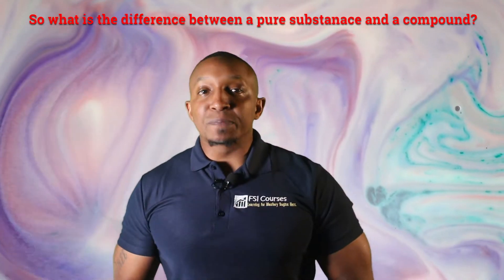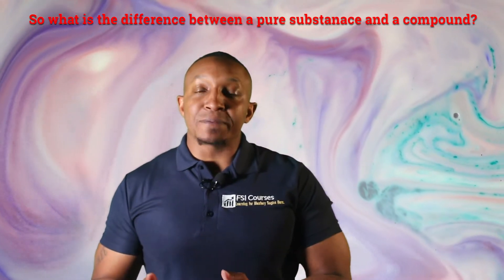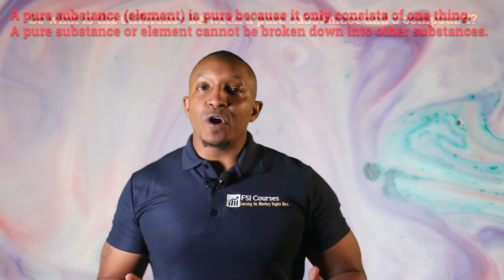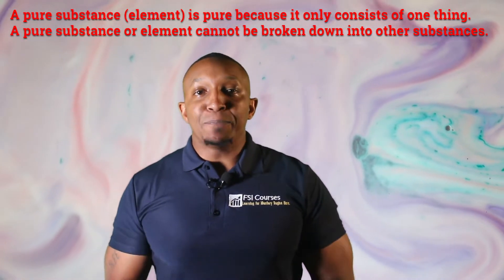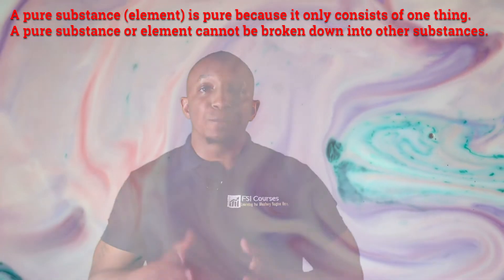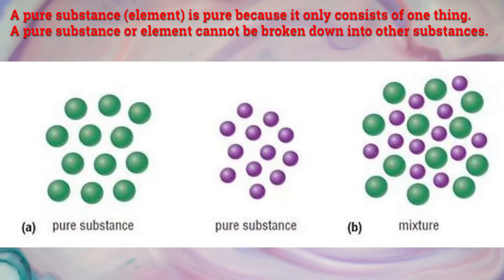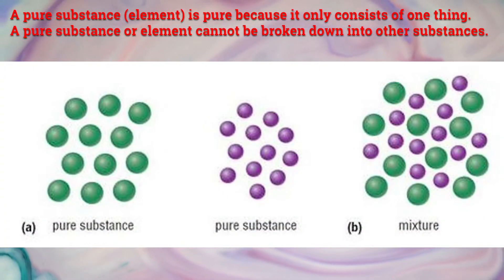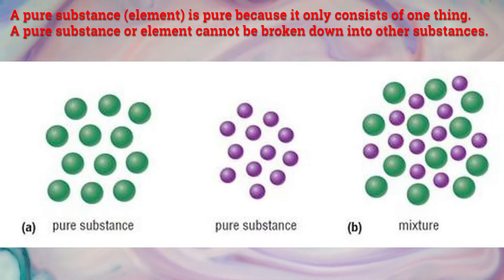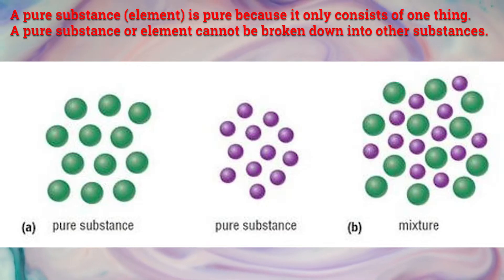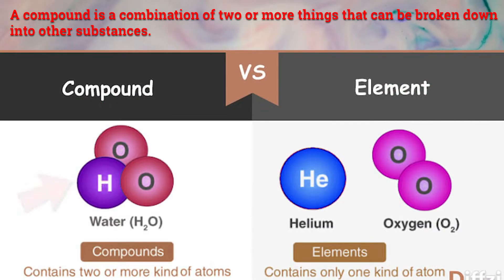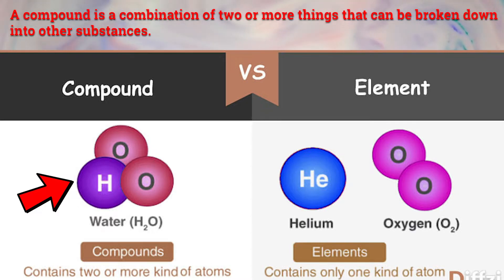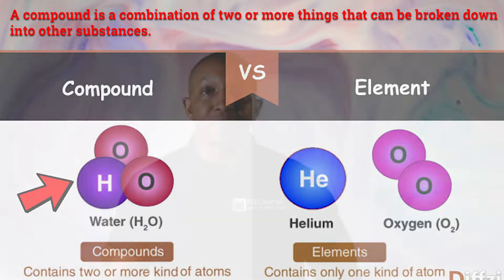So what is the difference between a pure substance and a compound? First let's take a look at the two definitions. A pure substance is pure because it only consists of one thing — a pure substance or element cannot be broken down into other types of substances. A compound is a combination of two or more things that can be broken down into other substances.